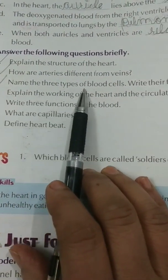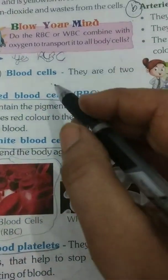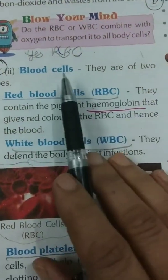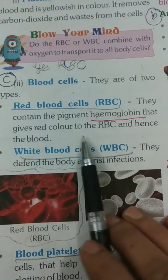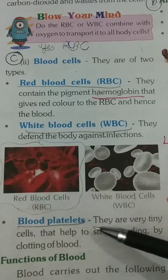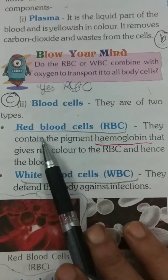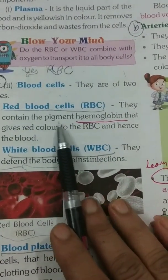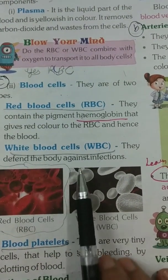Name the three types of blood cells and write their functions. Blood cells are of three types: red blood cells, white blood cells, and blood platelets. Red blood cells contain the pigment hemoglobin, which gives red color to the RBC and hence to the blood.